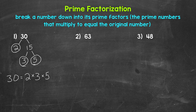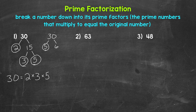Before moving on to number two, let's go through this a different way to see if we end up with the same prime factors. Let's try starting with five and six. Five is prime, so we are done there. And then six we can break down to two and three. Two is prime and three is prime, so we are done. And we get the same prime factors: two, three, and five. So we get the same thing that way as well.